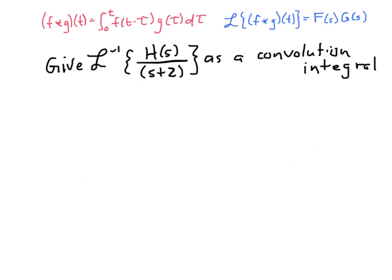There was a bit of a glitch with the recording program, so the next example picks up mid-stream. Here we're looking at the inverse transform of an unknown function h of s over s plus two. This shows the real power and utility of convolution as an inverse transform when we have an unknown function. We rewrite h of s over s plus two as h of s times one over s plus two.